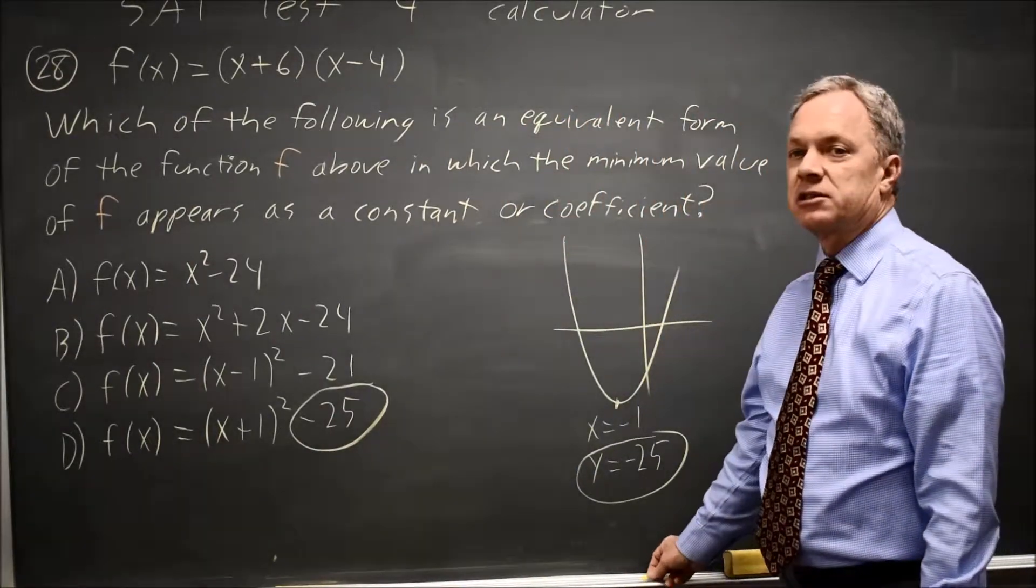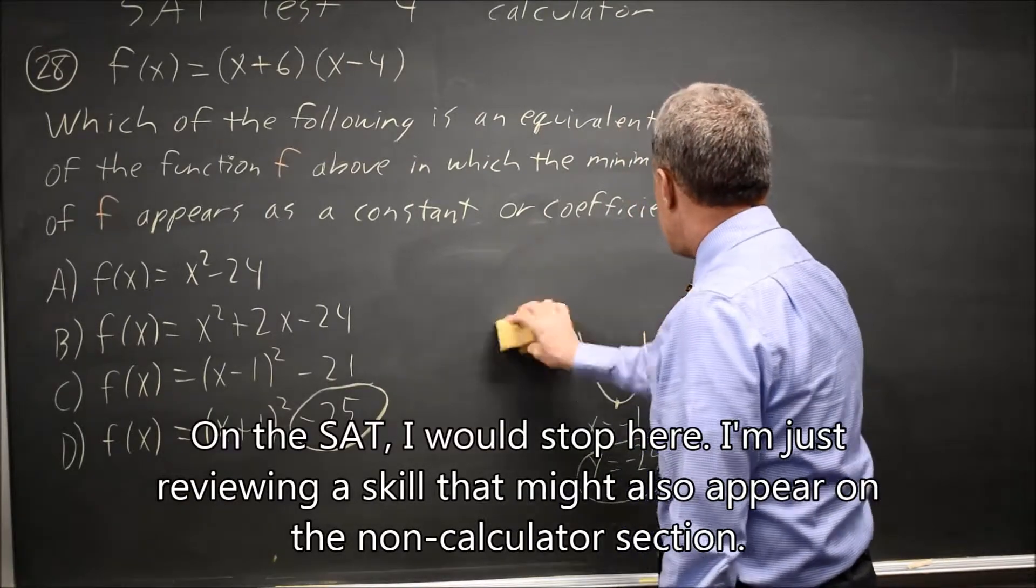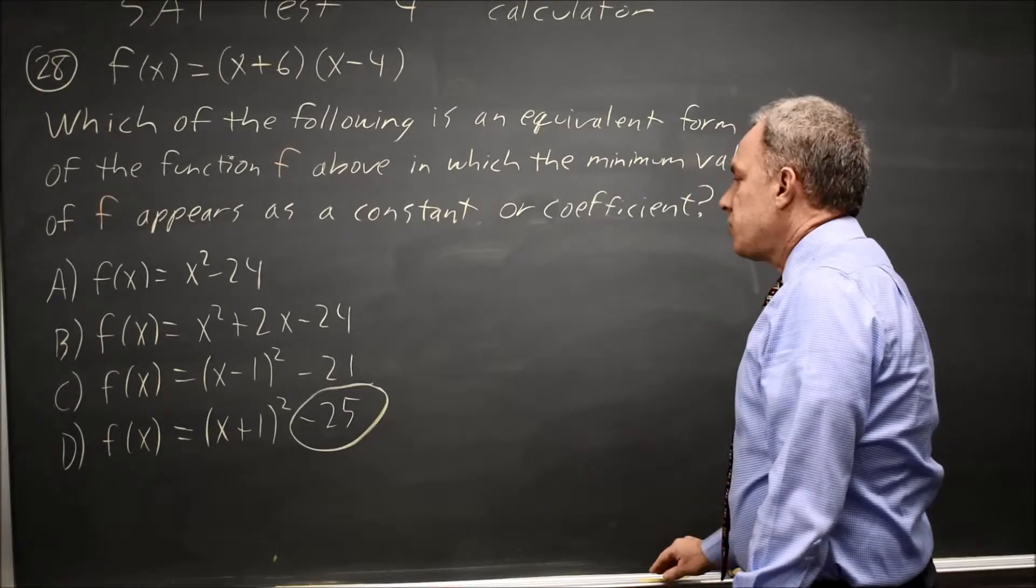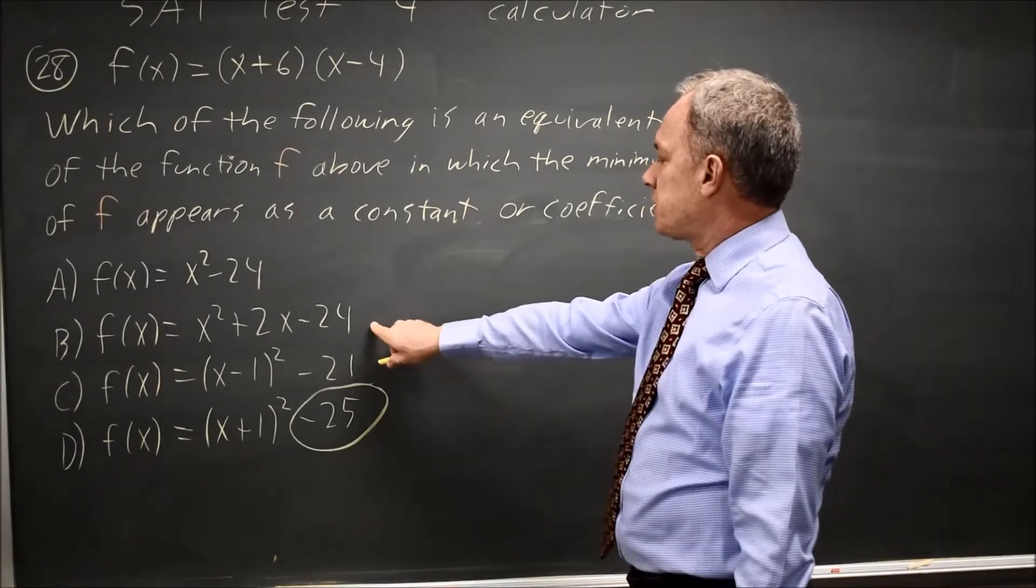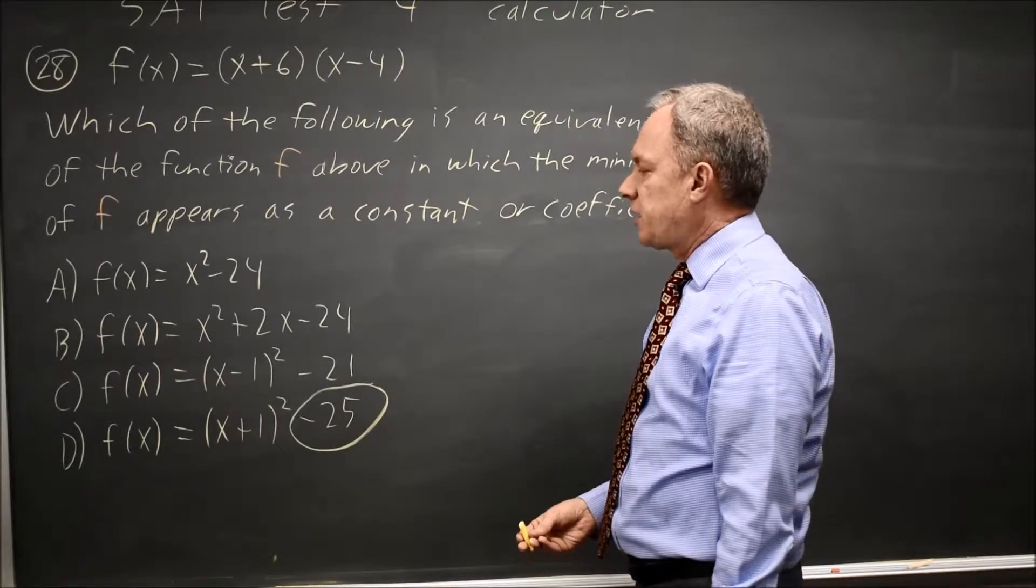That's the correct answer. If I try to do this by hand without the calculator, I can also find the answer. I know from FOIL that B is equivalent, but the negative 25 does not appear in that answer or in choices A or C.